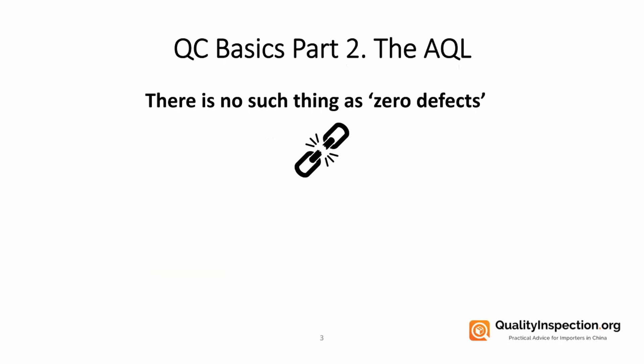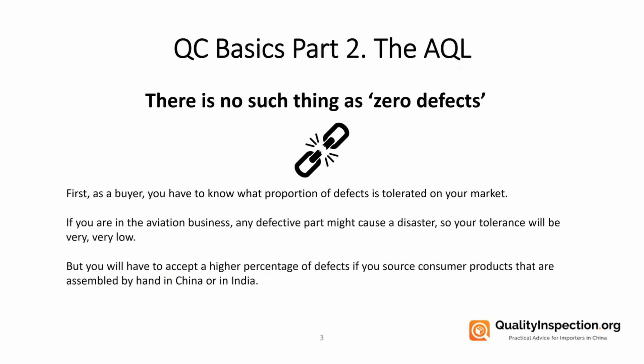Before we dive into trying to work out the AQL, we need to understand that there's no such thing as zero defects. If we accept that there might be defects in every lot produced by our suppliers, we need to define what proportion of defects can be tolerated for our markets. A good example is the aviation industry — any defective parts are very serious because they could cause a disaster, so the tolerance there is very low. It's a bit different for importers from China, India, and other areas in Southeast Asia, because if you're sourcing consumer products from there, you're going to have to accept a higher percentage of defects.